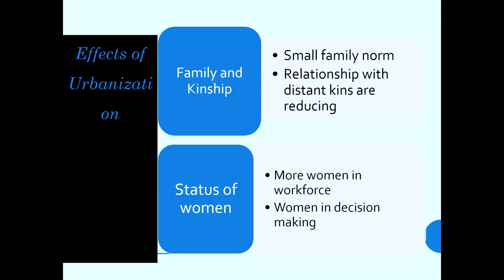Urbanization has a deeper effect on the family and kinship system. There is a small family norm, with relations maintaining more distance and kinship ties reducing. Because people live in limited geographical areas like small flats, you cannot have 10 to 15 members in a small flat. So the small family norm has become the norm for every family. Also, because people are busy with their professional life and jobs, they are not able to meet even their distant relatives. That is one major effect of urbanization on the family and kinship system.